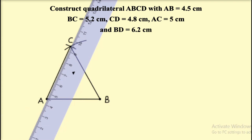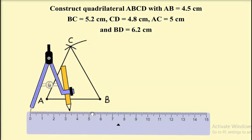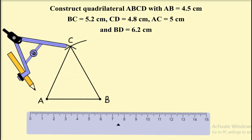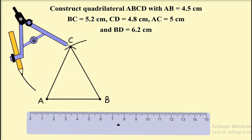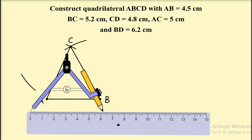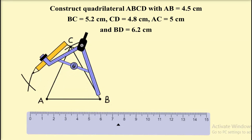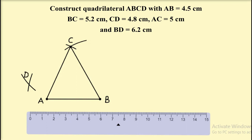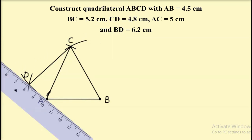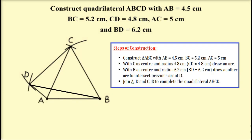Now we have to locate the fourth vertex D. Take CD equal to 4.8 cm and with C as center draw an arc. Then with B as center and the last measurement BD equal to 6.2 cm as radius, draw another arc. Let both arcs intersect at point D. Now join points C and D, and also join points A and D. So here ABCD is the required quadrilateral.